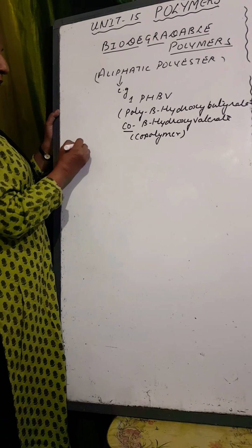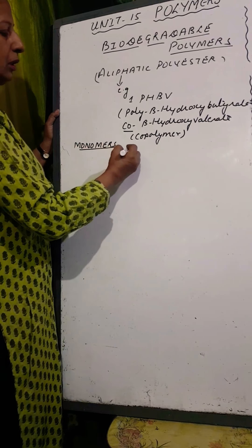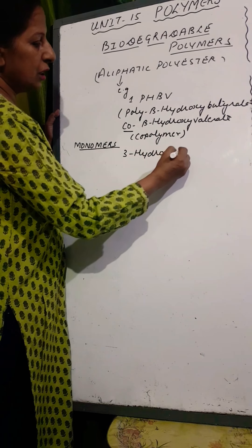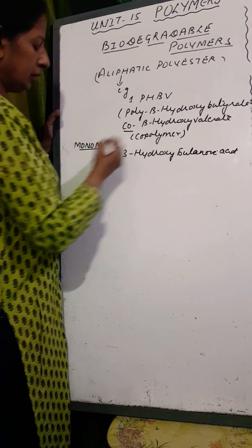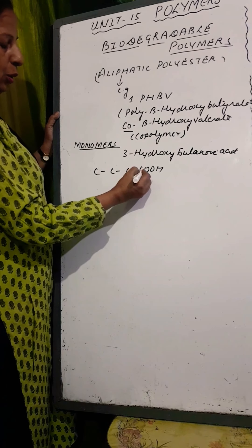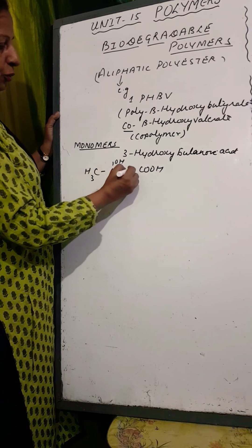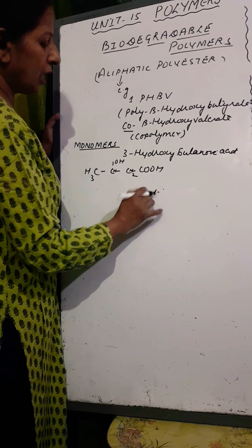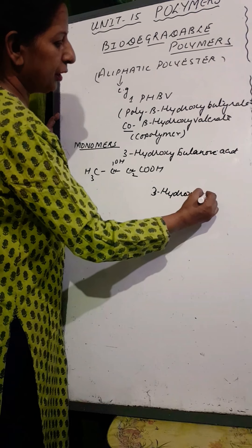The monomers of PHBV are 3-hydroxybutanoic acid and 3-hydroxyvaleric acid. For 3-hydroxybutanoic acid: this is butanoic acid with 4 carbon atoms, with an OH group at position 3. Complete the hydrogens to get the structure of 3-hydroxybutanoic acid.